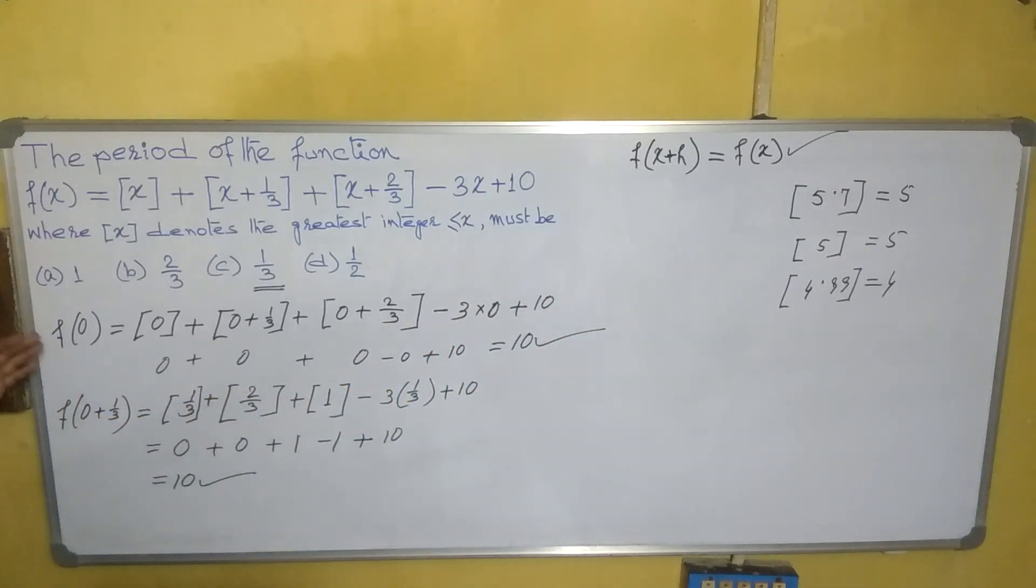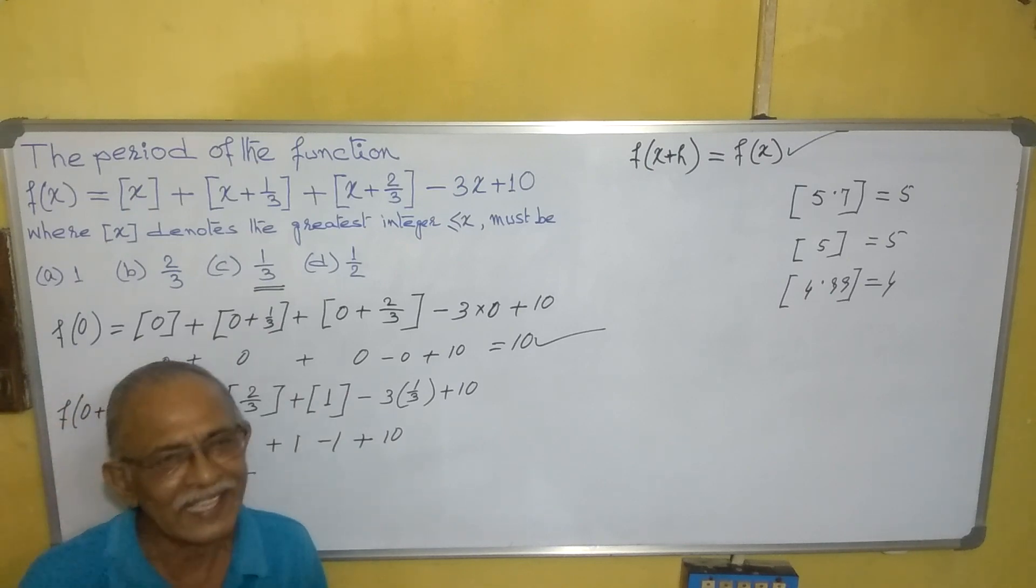For 3/3 that is 1, for this one also it will satisfy. And if we take instead of 0, suppose 5, you will get the same answer. But for 1/6 it will not satisfy this condition. So out of these, the least one is 1/3, and you need not check all these things. When you are getting the smallest value and that one is correct, you need not do further. That will be your answer. Thank you.